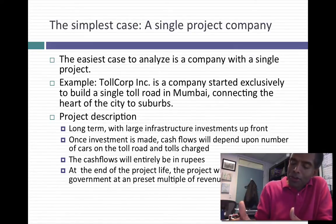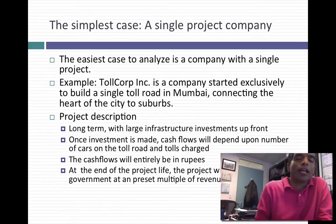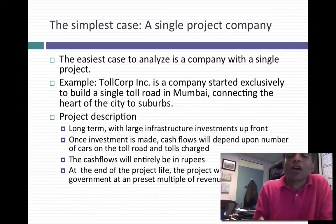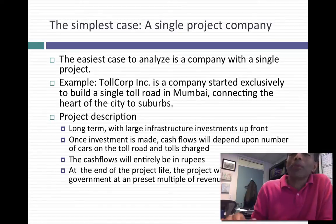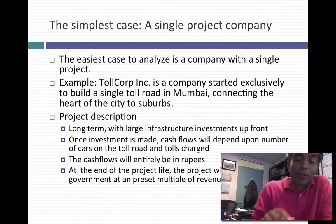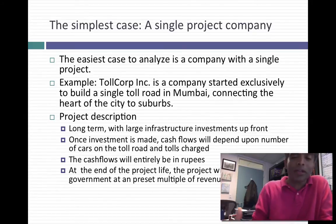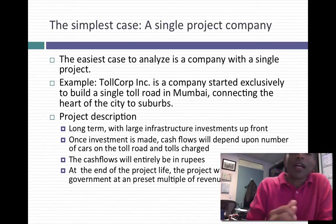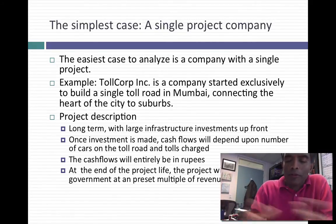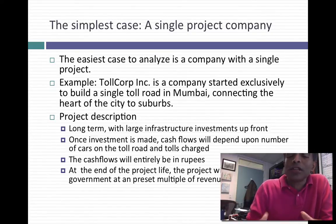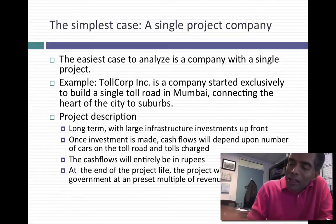This is a fairly easy project to analyze. It's a long-term project with infrastructure investment costs over three to five years — and remember, this is India, so add another three years for regulatory delays and legal issues. So let's say it takes eight years of cash outflows before cash inflows start. The cash flows are all going to be in rupees. If you think about financing this project, you need a structure where you don't have to make interest payments for the first eight years. It also helps you identify risks: what prices can you charge, how many cars will use the toll road, and what drives the value and success of the company.